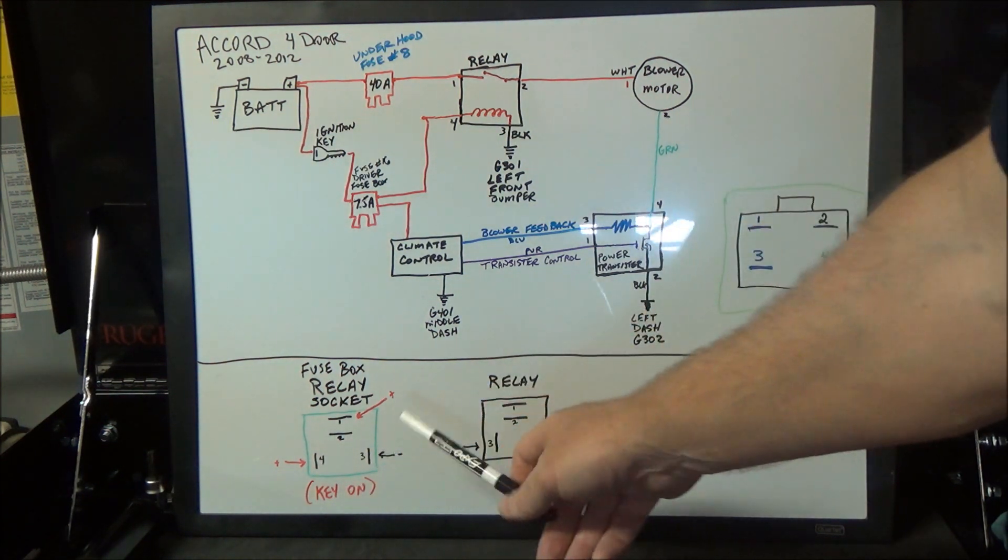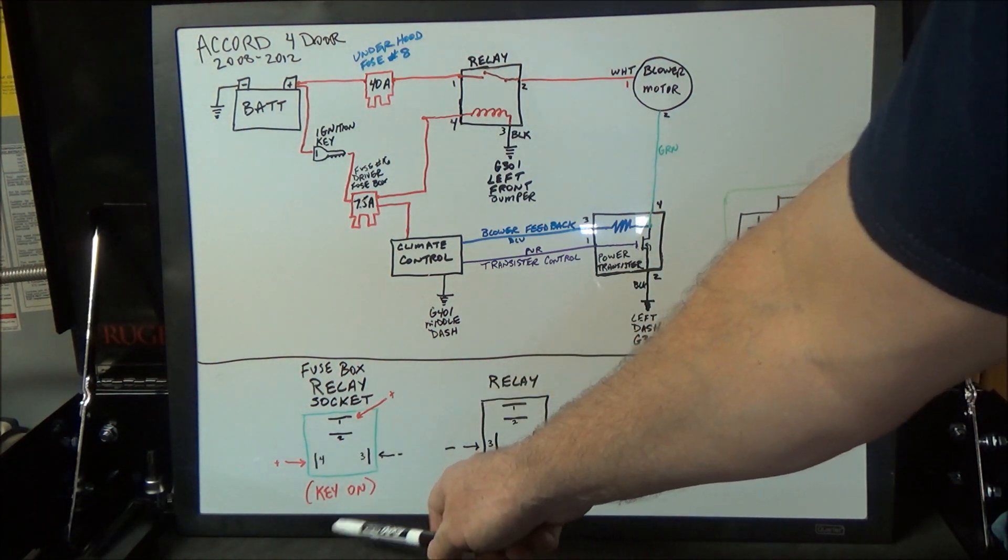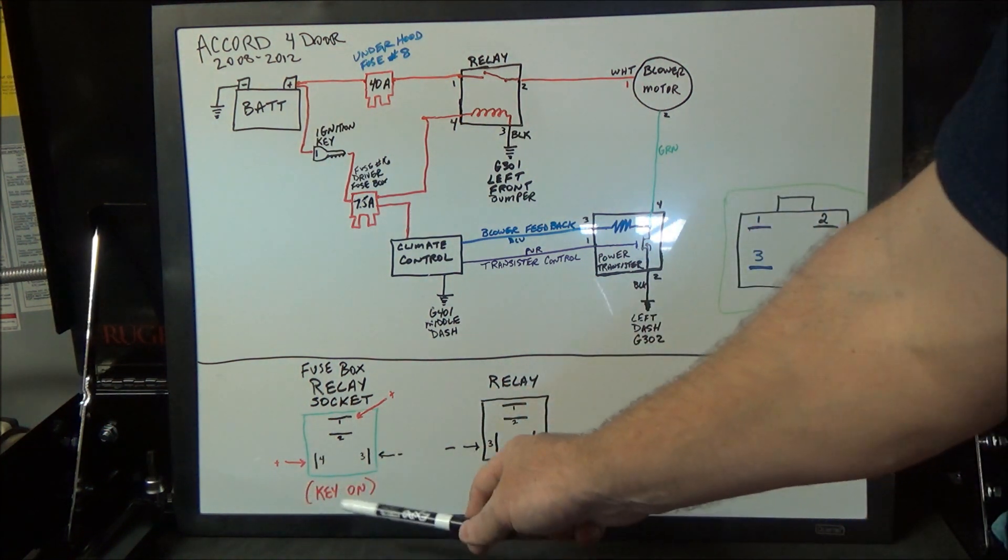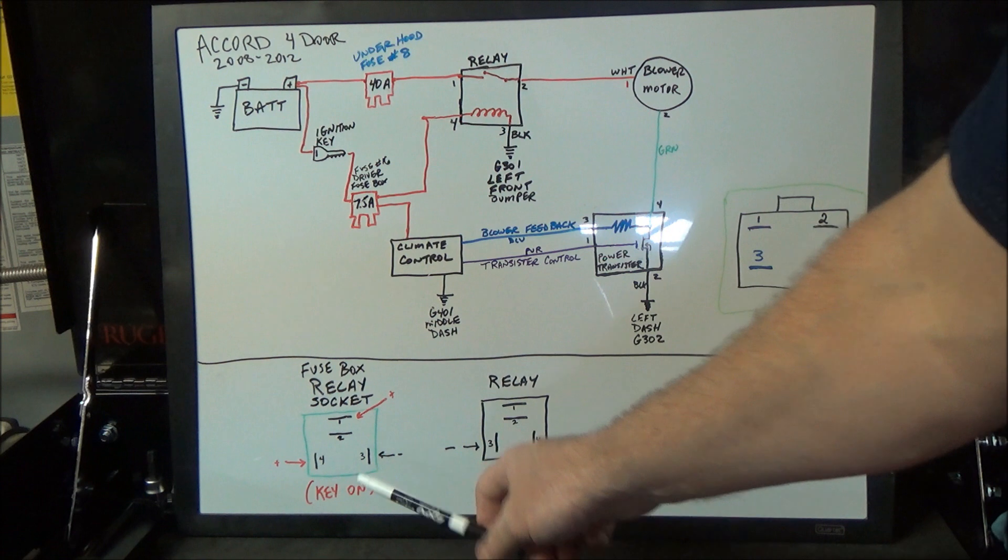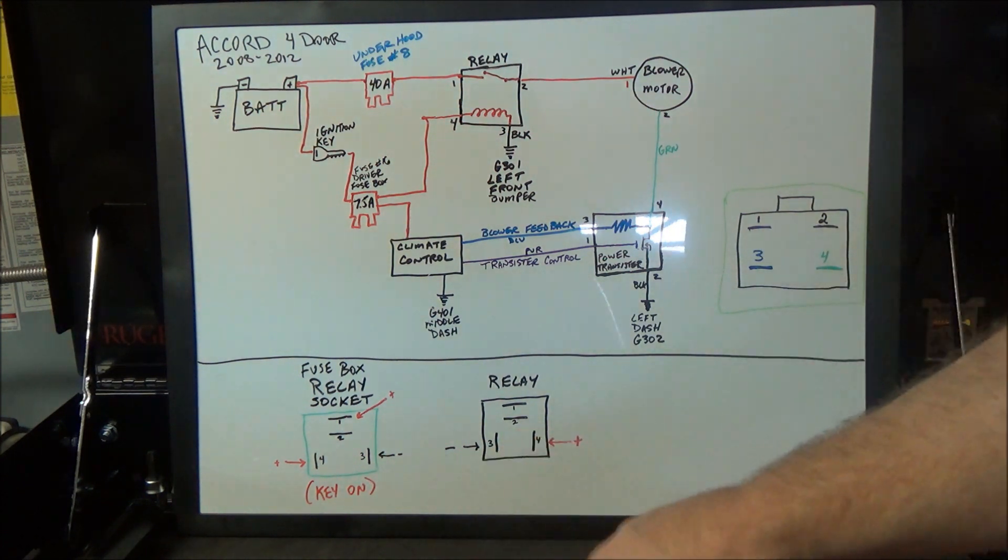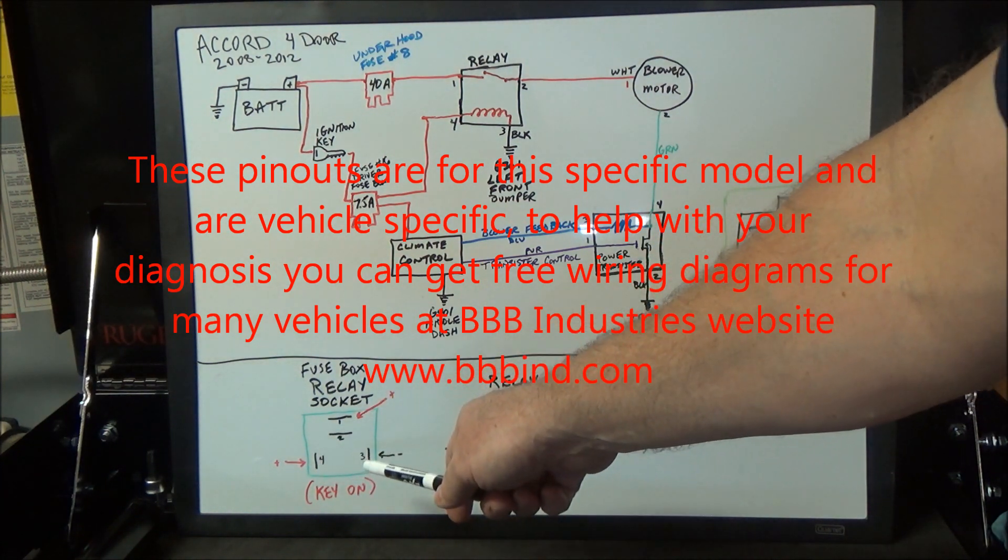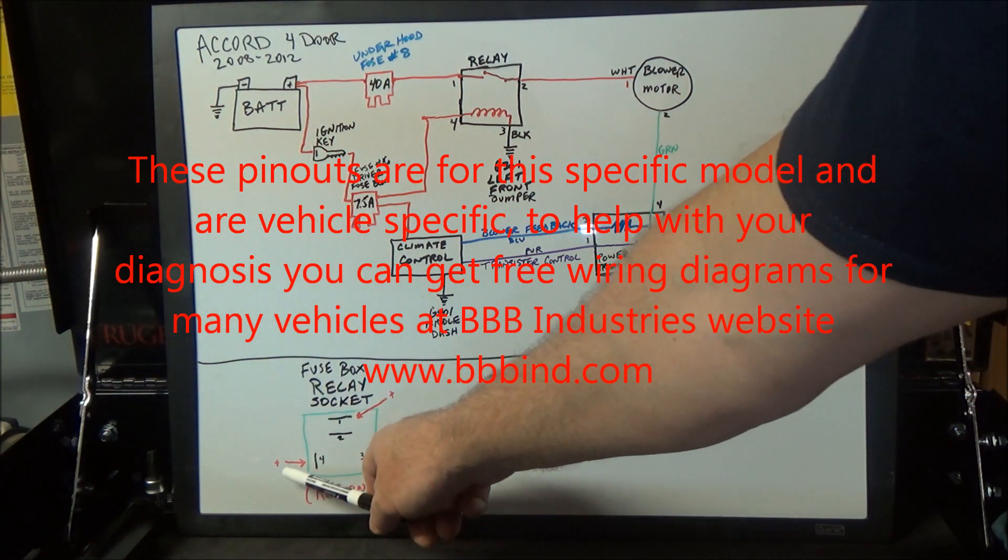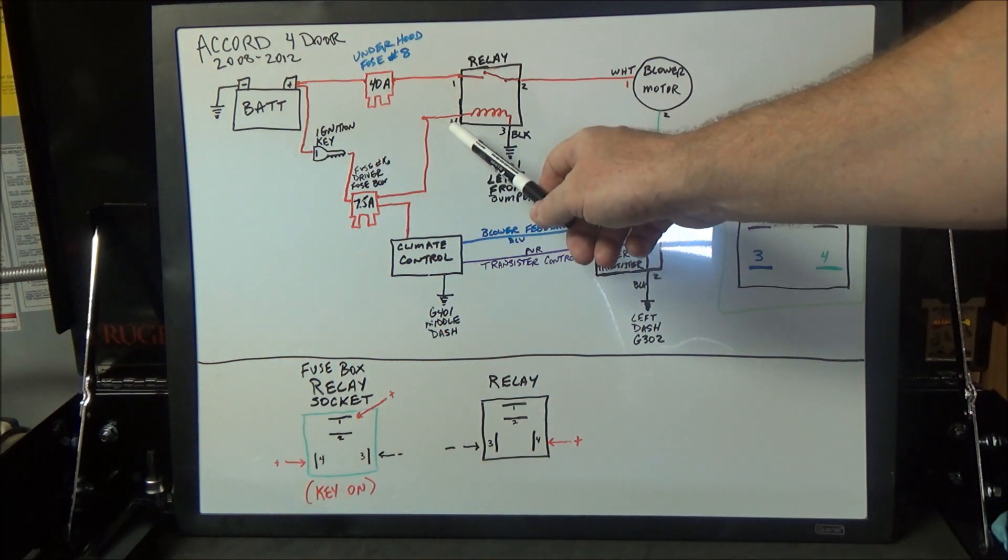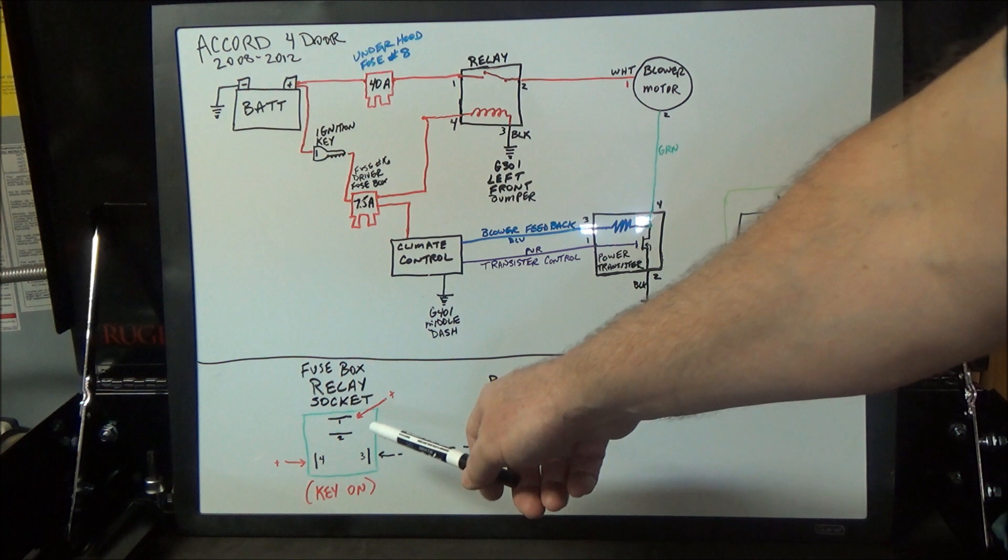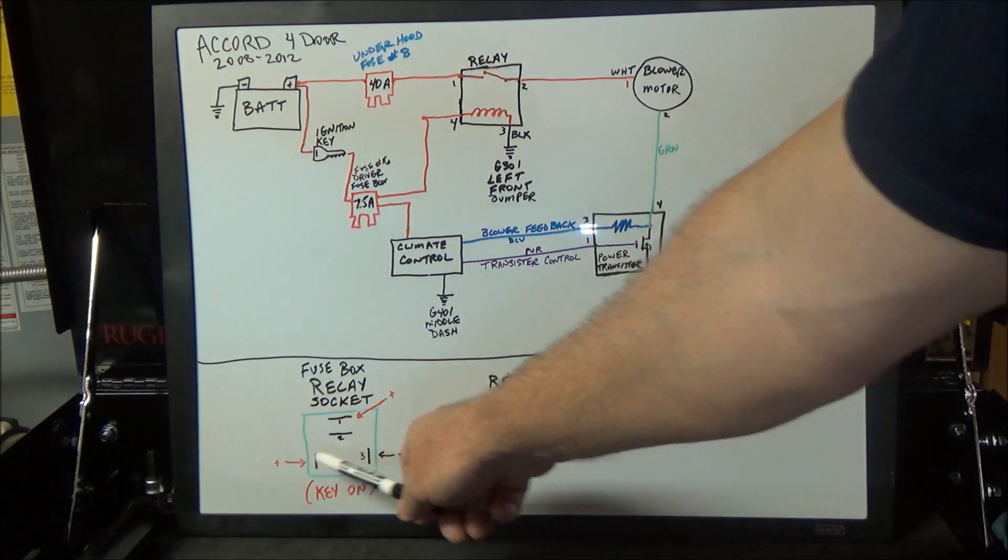Inside the socket of the fuse box, you will see pins one, two, three, and four just like that. With the key on, you should check pins one and four for power, and you should check pin three for ground. You don't want to be chasing down a relay problem when really your problem is you don't have power and ground on that circuit.